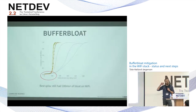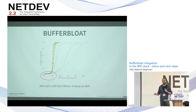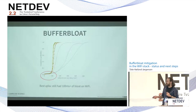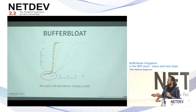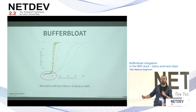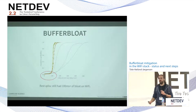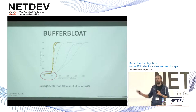This has been pretty much fixed in large parts of the stack, but as we can see here, this is a plot of different queuing disciplines applied to a Wi-Fi link, and even the best ones still have almost 100 milliseconds of latency at the Wi-Fi link. I'll get back to why that is and what we did to fix it, but this was sort of what we had going into this.